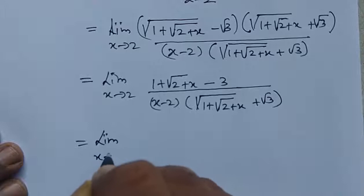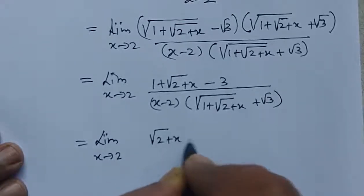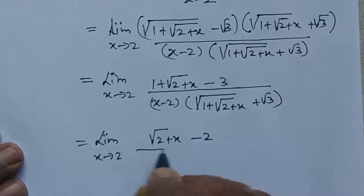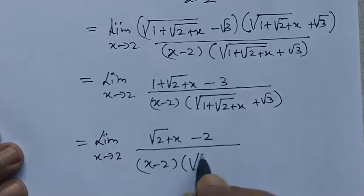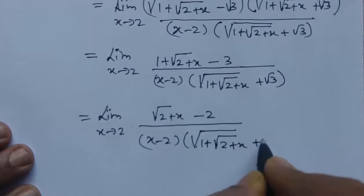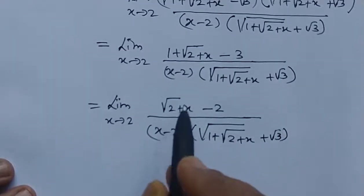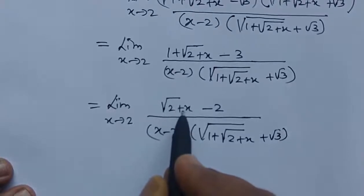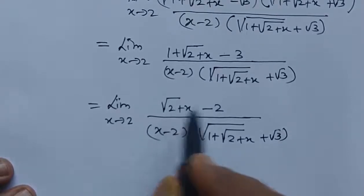The limit now becomes: limit as x tends to 2 of (square root of (2 plus x) minus 2) divided by (x minus 2) into (square root of (1 plus square root of (2 plus x)) plus root 3). Since this is still irrational, we again multiply by its rationalizing factor.